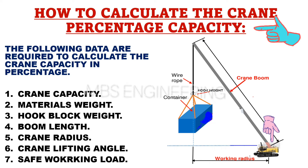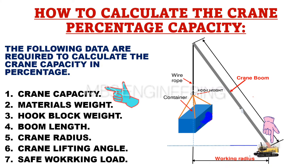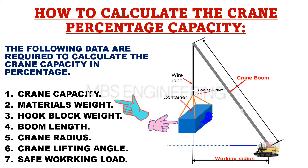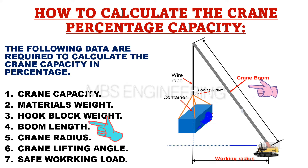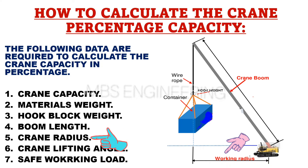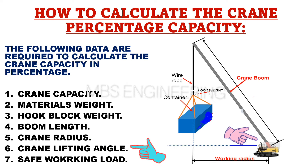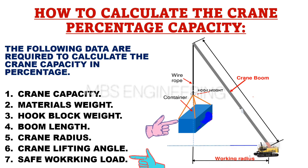We will be discussing how to calculate the crane percentage capacity. The following data are required: first, crane capacity; second, materials weight; third, hook block weight; fourth, boom length; fifth, crane radius; sixth, crane lifting angle; and seventh, safe working load.